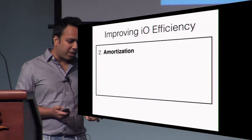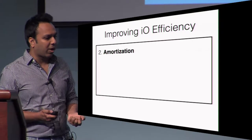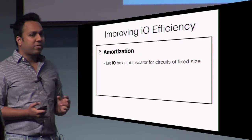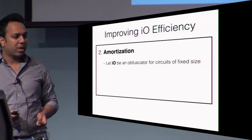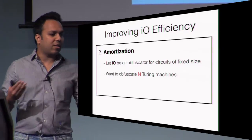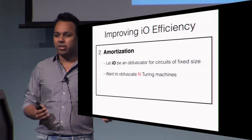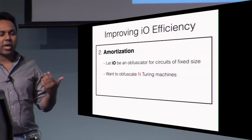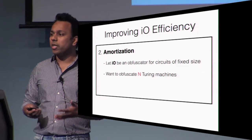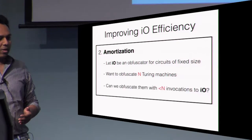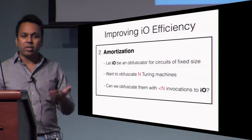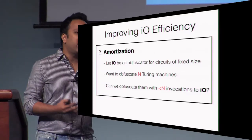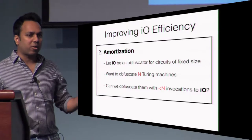The second problem we are interested in is that of amortization. Let's say we are given an indistinguishable obfuscator for circuits of some fixed, a priori fixed size, and somebody tells us they want to obfuscate some polynomial number of Turing machines where this polynomial could be arbitrary. The question is: how many invocations of the underlying indistinguishable obfuscator do I need to make in order to obfuscate all of these Turing machines? Can we obfuscate all of them with less than n invocations? Ideally, we want to go as small as possible.